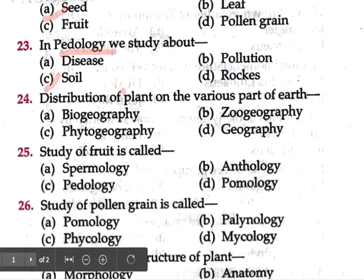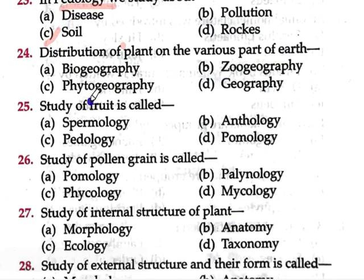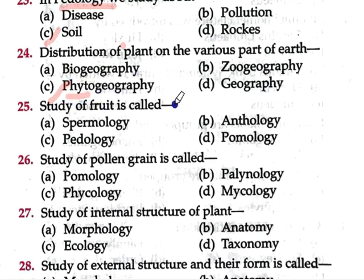Question number 24: Distribution of plants on the various parts of earth — option A biogeography, option B zoogeography, option C phytogeography, option D geography. Since we are talking about distribution of plants, option C is correct — phytogeography. 'Phyto' means plant, and 'geography' refers to distribution. So phytogeography studies how various varieties of plants are distributed across different parts of the Earth.